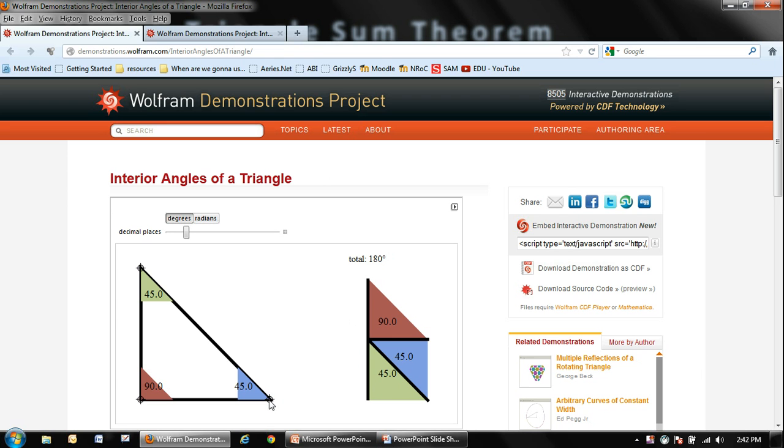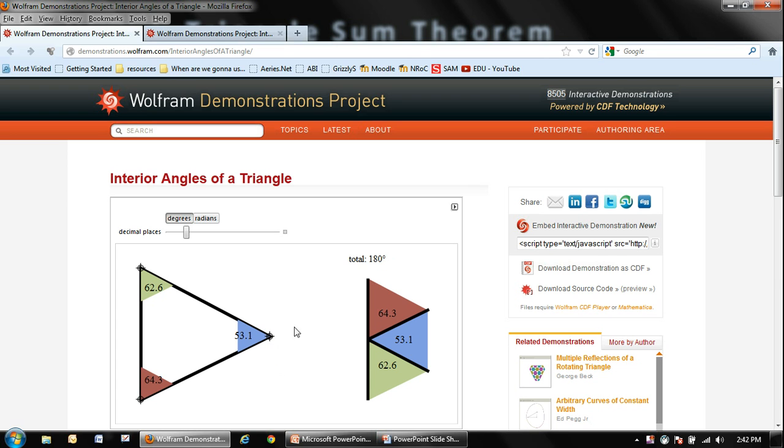So let's go ahead and move one of these angles about and change its measurement. Let's say we move it over here. Now you can see the shapes all changed. This one's now 62.6, 64.3, and 53.1. Look, it does not change the fact that if you add all three of them together, you still get 180 degrees.